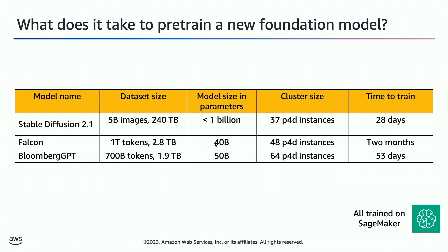Falcon has 40 billion parameters and the training took about two months. They report two months rather than 60 days precisely, so we can assume there was some start and stop in that two-month period.